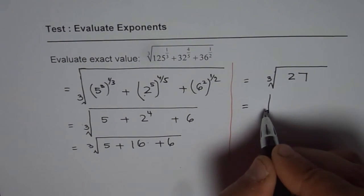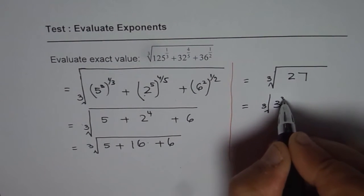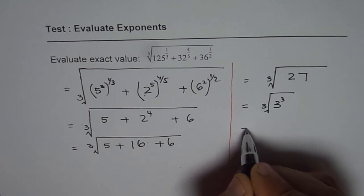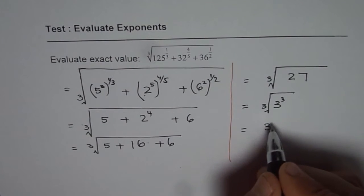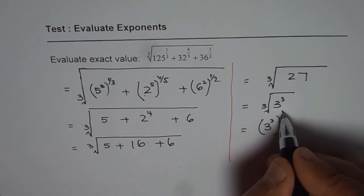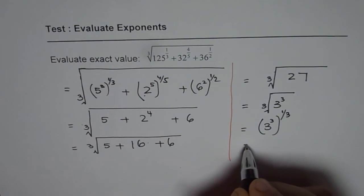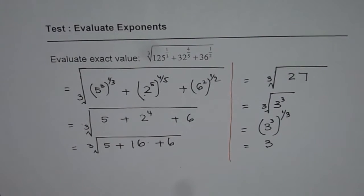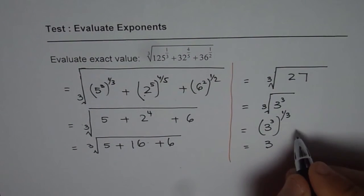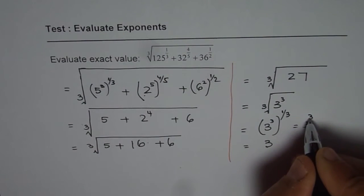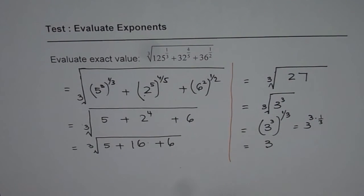Now 27 could be written as 3 cubed. So what do we get? We get 3 cubed to the power of 1 over 3 which is indeed equals to 3. So this expression simplifies to 3. How do we get it? 3 to the power of 3 times 1 over 3, that is 3. So that is how you can simplify it in a very neat way.